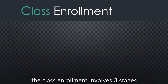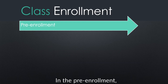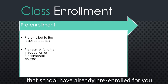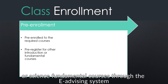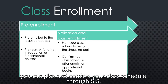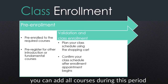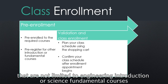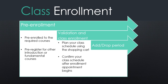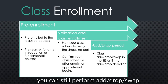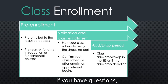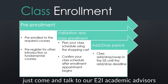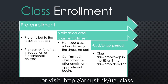Here's a quick recap. The class enrollment involves three stages. In the pre-enrollment, you will find that there are some courses that the school has already pre-enrolled for you, and you can still pre-register some engineering introduction or science fundamental courses through the e-advising system. During the validation and class enrollment, you can plan and confirm your class schedule through SIS, and you can add all courses during this period that are not limited to engineering introduction or science fundamental courses. During the add-drop period, you can still perform add, drop, or swap in the SIS until the add-drop deadline. We hope this video can help you with the course enrollment process. If you have any questions, just come and talk to our e2i academic advisors or visit the following link.